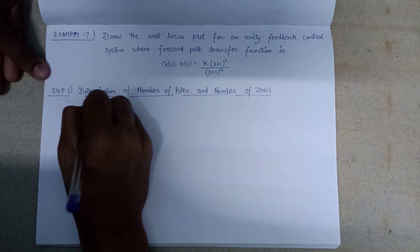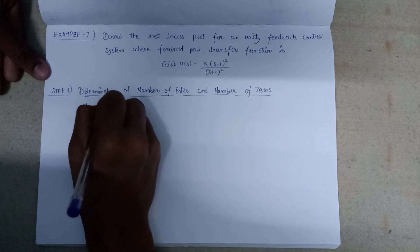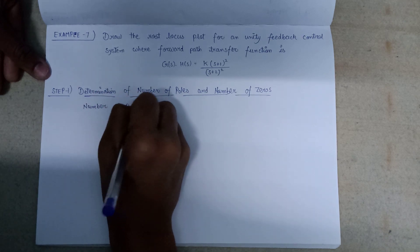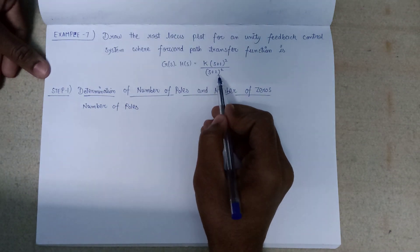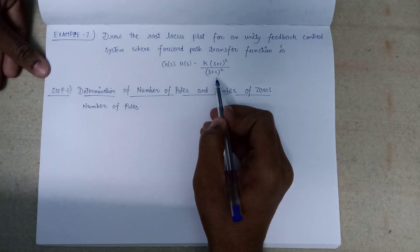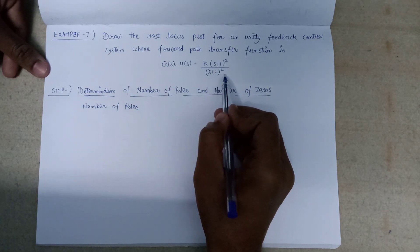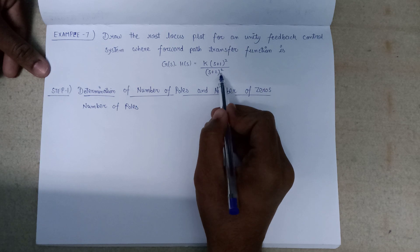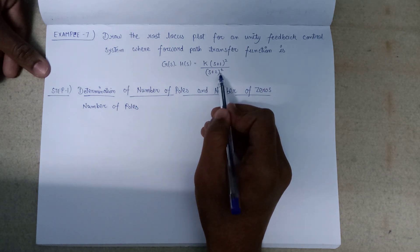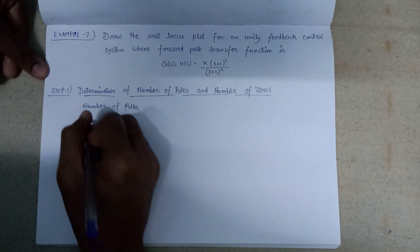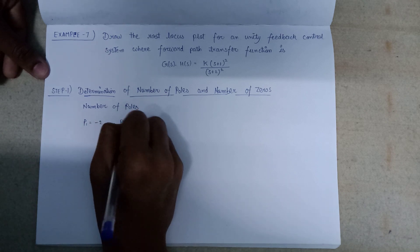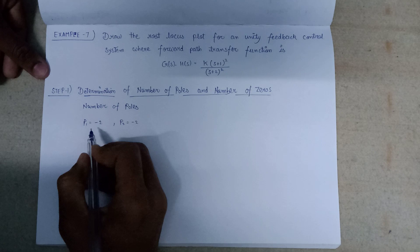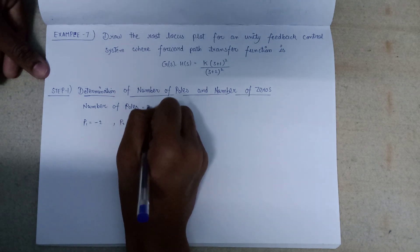We will calculate the number of poles by equating the denominator to zero. On equating (s+2) = 0 we get 2 poles because it is a whole square. Both poles lie at s = -2, so pole P1 and pole P2 both lie at s = -2. The number of poles is equal to 2.